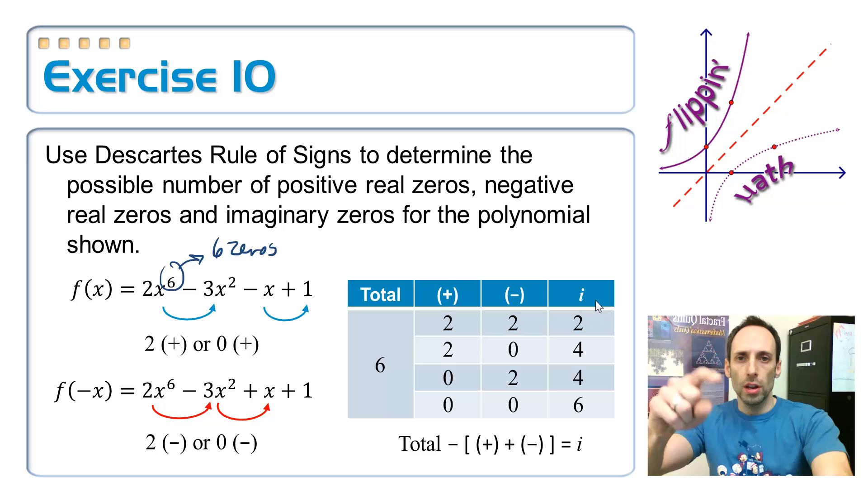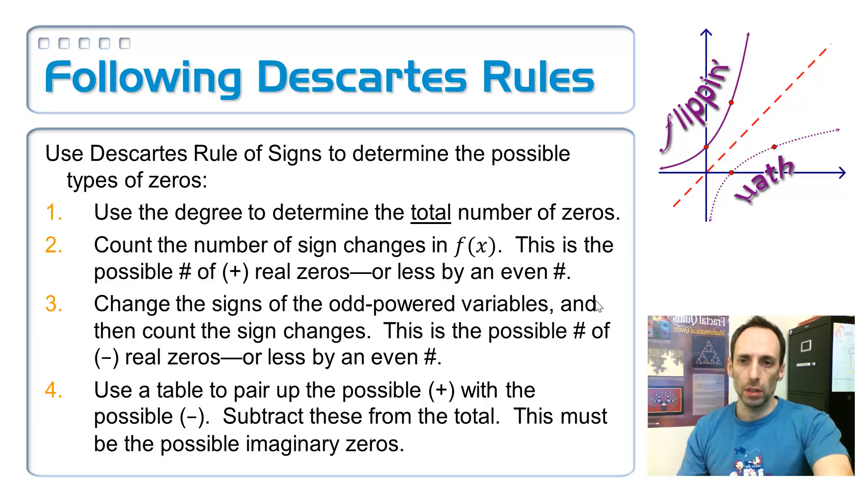So you have a couple to try down below. And in the meantime here, here are the rules all written out, like step by step what you should do. So we're going to use the Descartes rule of signs to determine the number of possible types of zeros, either positive reals, negative reals, or imaginary ones. So the first one is figuring out how many you're supposed to have. What's the total number of zeros I'm supposed to have, and that's the degree. Number two, you're going to count up all the sign changes in the original function. Where does it go from positive to negative, or negative to positive? You write that number down, and then whatever it is, take two away from it.